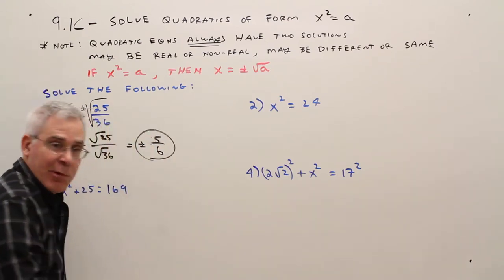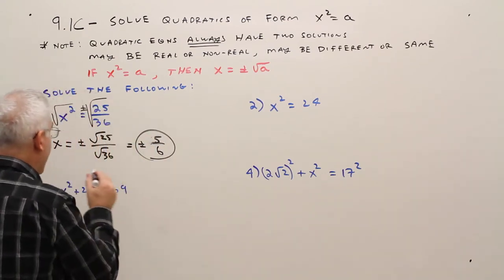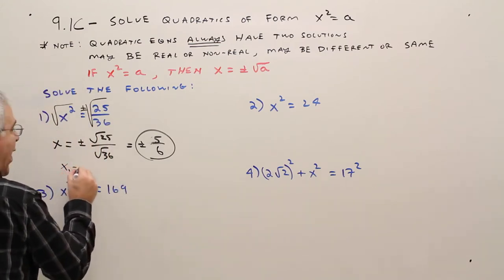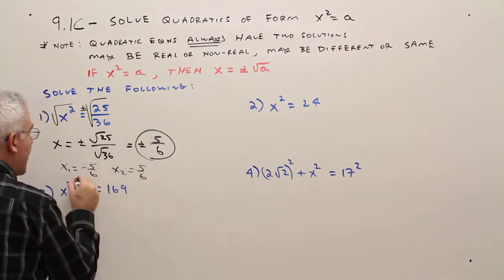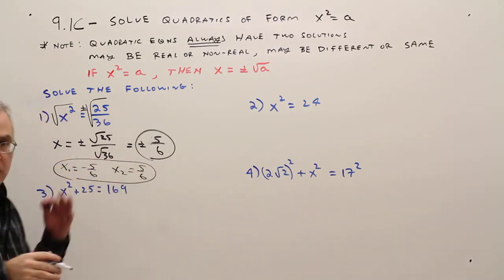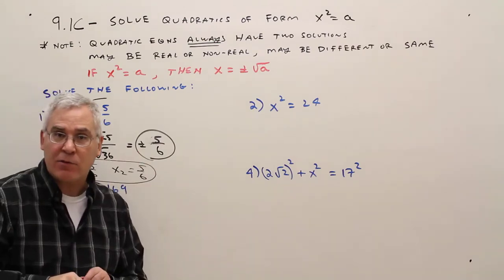Sometimes if I quiz or test, I'll give you two answer blanks, so X sub 1 equals minus 5 over 6, X sub 2 equals positive 5 over 6. Two different ways of representing the answers.